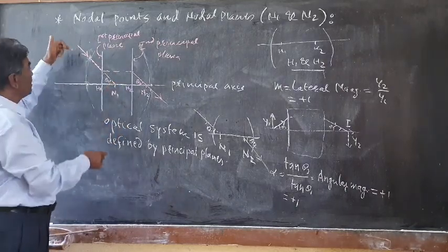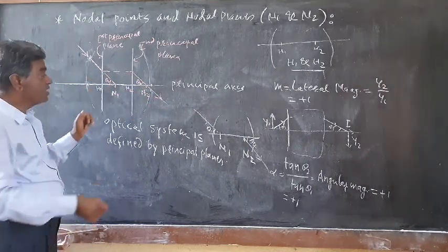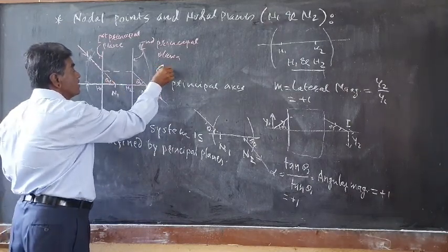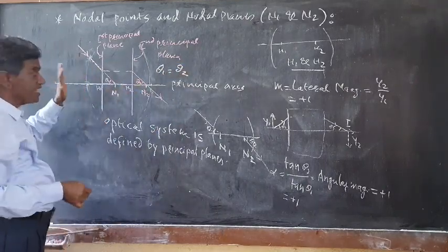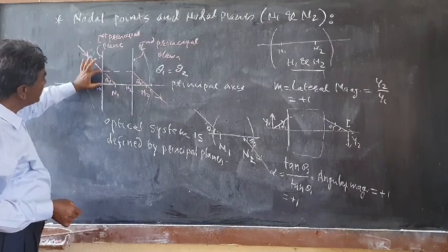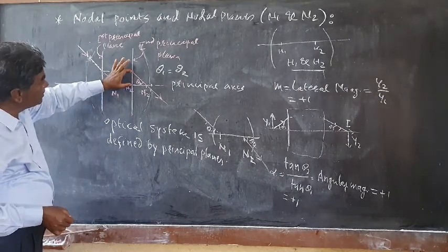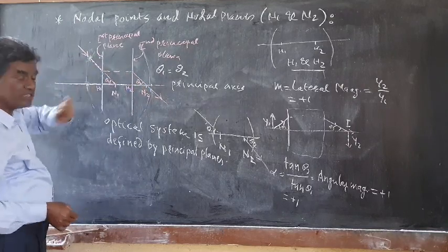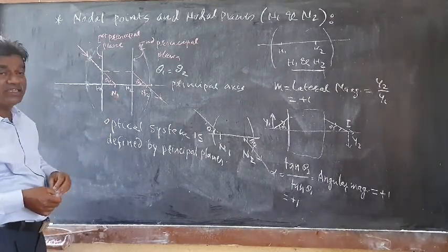Here is the first nodal point N1. A ray of light directed towards it will emerge from the second nodal point N2 such that theta one equals theta two — they are parallel to each other. According to the properties of the first principal plane, a ray incident here will emerge such that the refracted ray goes in a direction parallel to the incident one. Such a pair of points, N1 and N2, are known as the first nodal point and the second nodal point.